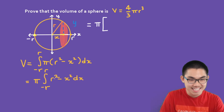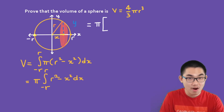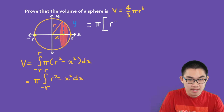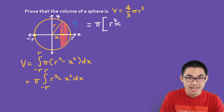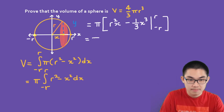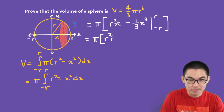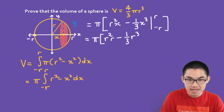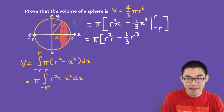Pi times the antiderivative of R squared, which is a constant, is R squared times x. And the antiderivative of negative x squared is negative 1 over 3 times x cubed. So we have pi times R squared times R minus 1 over 3 times R cubed, substituting x equals R for the upper bound.